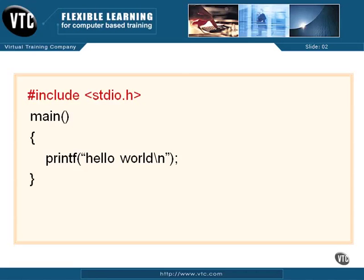The pound sign is usually in the first column, though it doesn't really have to be — you can have white space in front of it. But for readability and the common look of C programs, that pound sign is almost always in the first column. Also notice there is no end-of-line character after the STDIO.H and the greater-than symbol. There's no semicolon or anything like that. Nothing has to end that line.